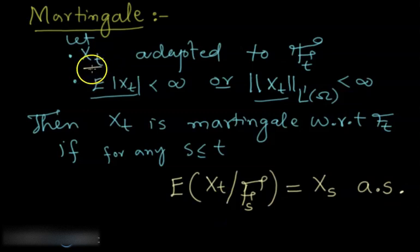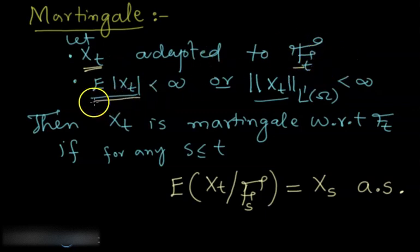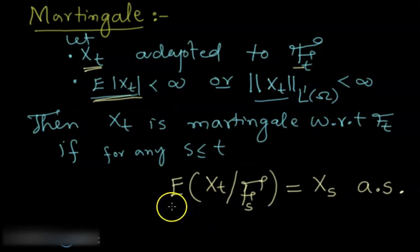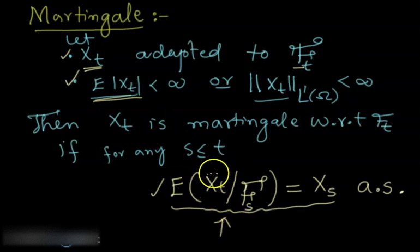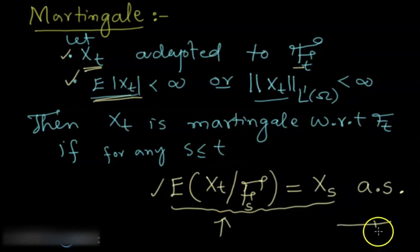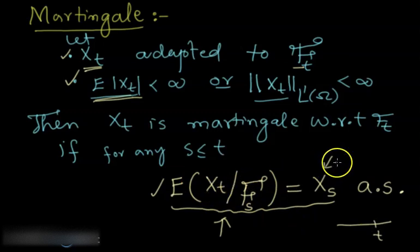So a martingale process is a stochastic process X(t) that is adapted to F_t, its expectation is finite (it is in L1(Ω)), and it satisfies this condition. If a stochastic process satisfies these three conditions, we say it's a martingale. This property says that if you want to know the expected value of the stochastic process at time t given information F_s, this equals X(s).